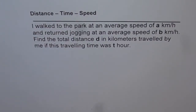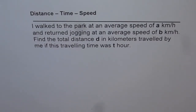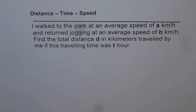Distance, time and speed. I walked to the park at an average speed of A km per hour and returned jogging at an average speed of B km per hour. Find the total distance D in km travelled by me if the travelling time was T hours. This is a very general distance-time-speed problem and we are going to encounter many similar questions in the following videos, so understanding this problem will help you solve all those questions.